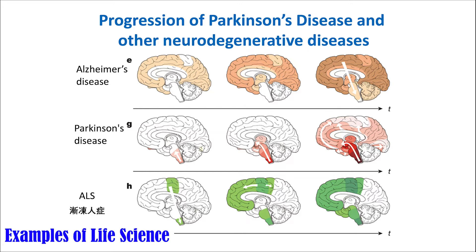The darkness of the color indicates the amount of neuronal cells that are defective. The darker the color, the more cells are defective. In the early stages of the diseases, there are some neuronal cells that are defective in certain areas of the brain. In the later stages, huge amounts of neuronal cells in the majority of the brain are defective, and the patients at this stage have severe symptoms.